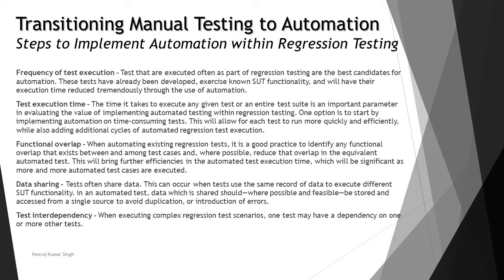The first point is frequency of test execution, which plays a vital role in determining how frequently your tests are being executed. If you are running tests manually and they are executed quite frequently, it is the best time to switch from manual to automation. But if tests are not executed frequently, then manual could be more cost-saving and efficient.